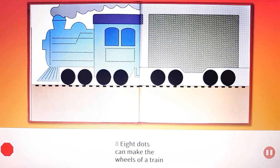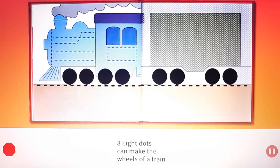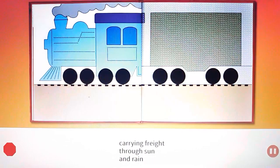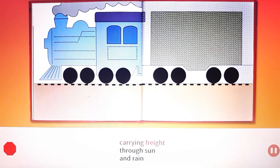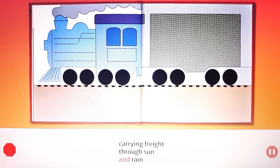Eight. Eight dots can make the wheels of a train carrying freight through sun and rain.